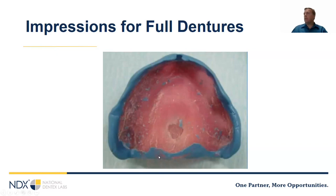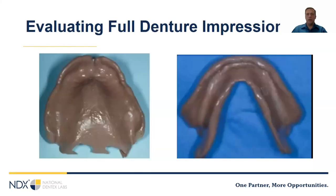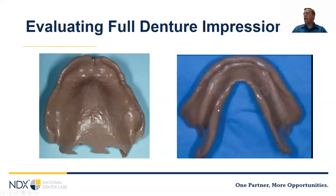For a maxillary impression, keep in mind that in the laboratory it's very difficult to see the vibrating line. If you can mark that on the impression, it makes the palatal border much more accurate and less likely to be dislodged. When evaluating a full denture impression, make sure the tray isn't showing through, it's smooth with well-defined peripheries, and there are no voids, drags, or tears. You want nice adaptation across the whole surface of the impression.